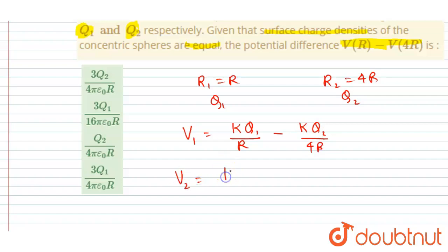So it will be plus by 4r. And because of the inner sphere of radius r and charge q1, it will be having a potential k q1 by 4r.